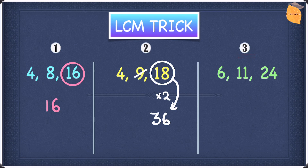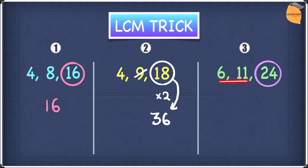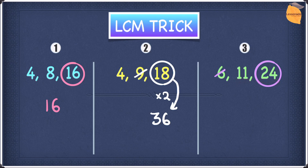Let's have a look at trick three. The example we have is 6, 11, and 24. Once again, find the highest number — which is 24. Next, we're going to see whether 24 is divisible by 6 and 11. We know that 24 is divisible by 6 because 6 goes into 24 four times, so we can cross the 6 off. But 11 does not go into 24. In this case, 11 is a prime number, so you multiply the prime number by the highest number. So we do 24 times 11, which gives you an answer of 264.